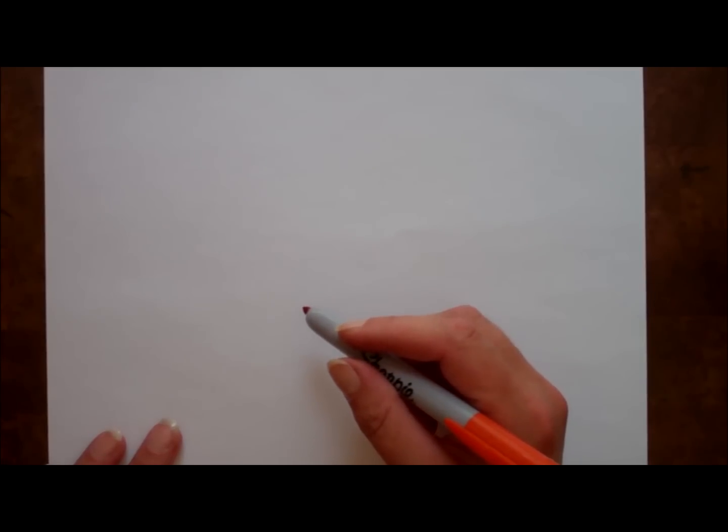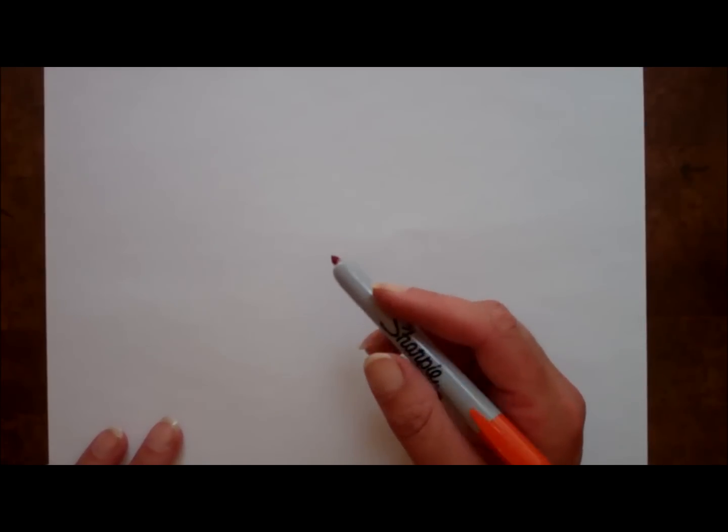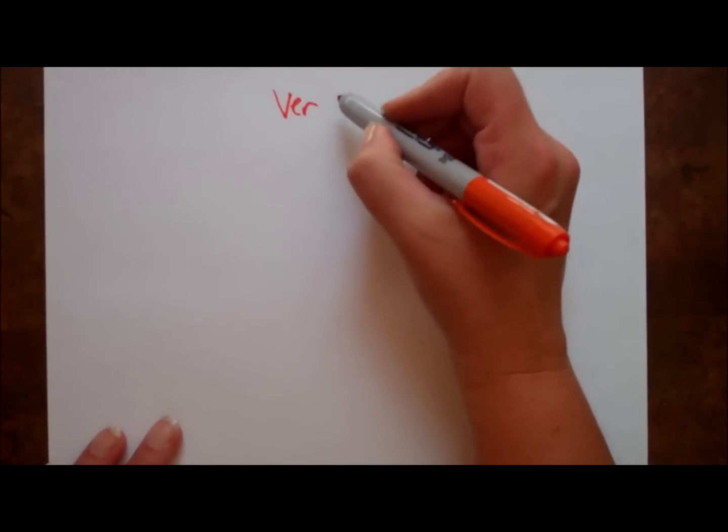Sometimes it's easier to understand something if we can see a diagram. Since there seem to be so many possibilities for verbs, objects, complements, etc., let's put it in a graphic format that makes sense, and we'll call it the verb tree.